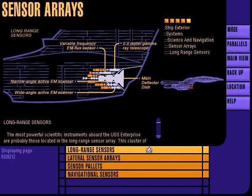The long range sensor array is located in the engineering hull directly behind the main deflector dish. This array contains a cluster of high-power active and passive subspace frequency sensors.